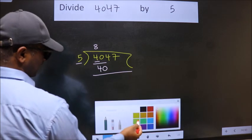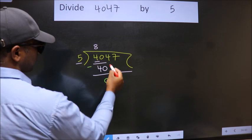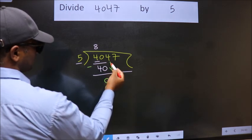Now we should subtract. We get 0. After this, bring down the beside number, so 4 down.